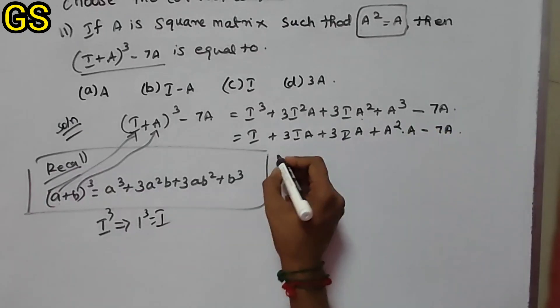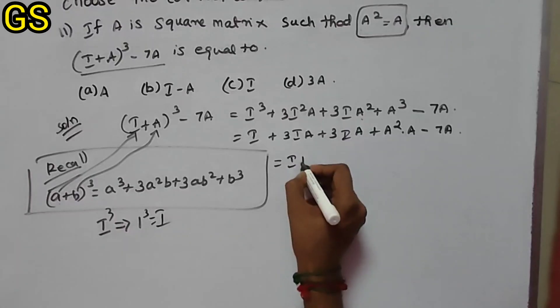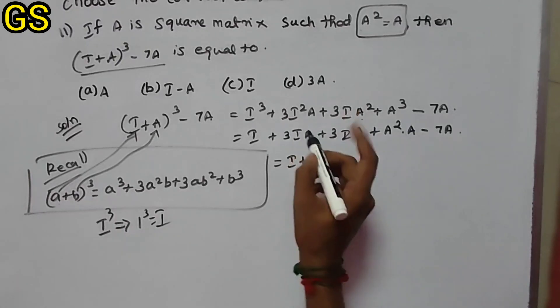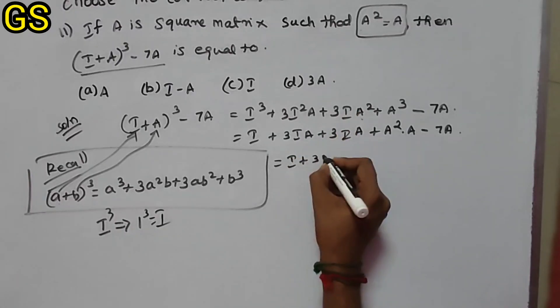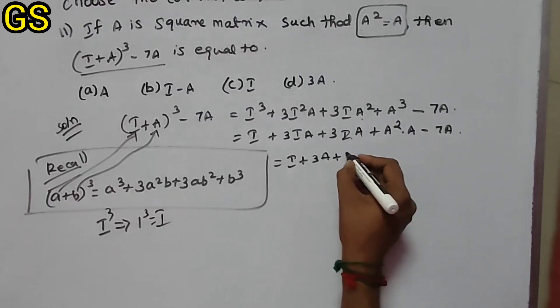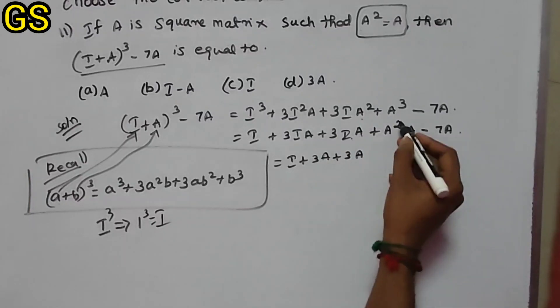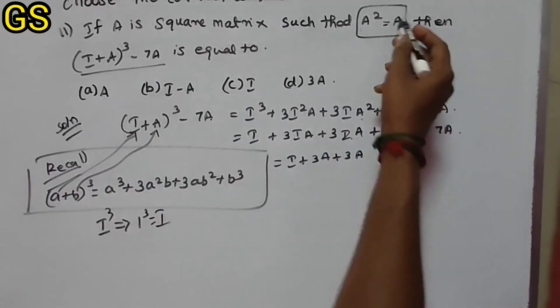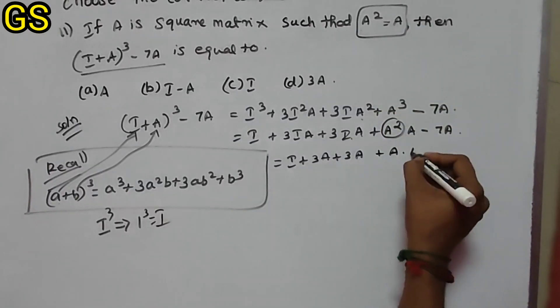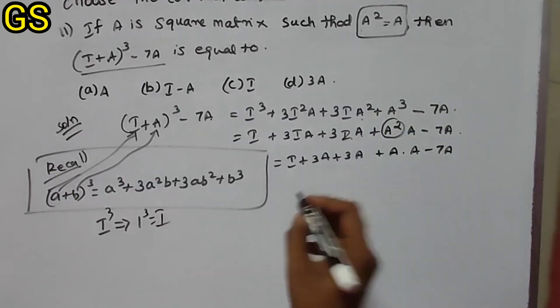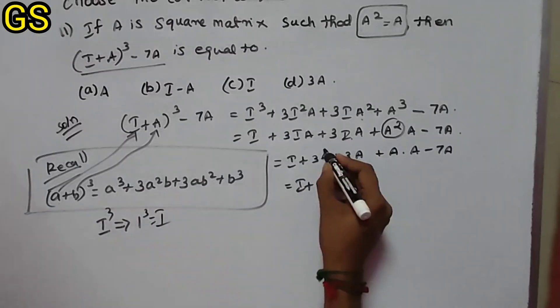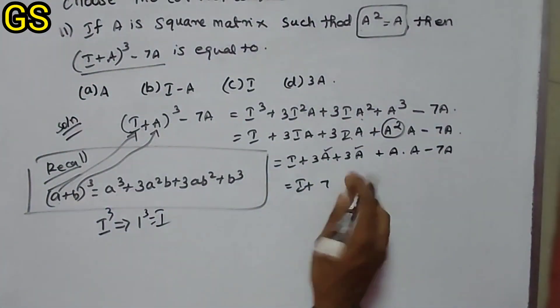Since A² = A, we have I + 3A + 3A. Combining terms: I plus 3A plus 3A equals I plus 6A.